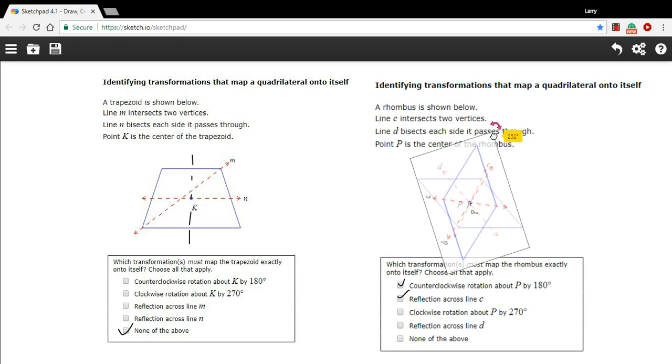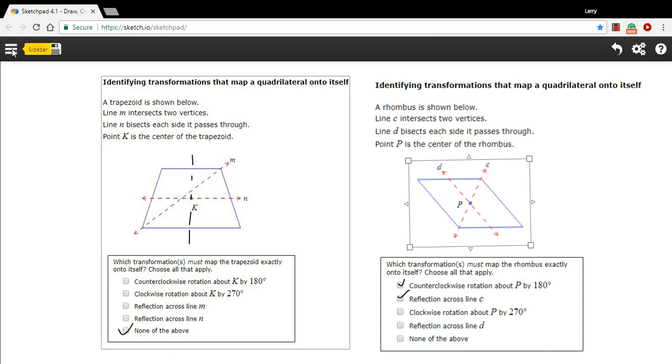And then the other choice is reflection across line d. Let's take a look at that one. Now this one sometimes trips people up because it might look to you that the shape over here is the same as the shape over here. But think about folding over this as a piece of paper.